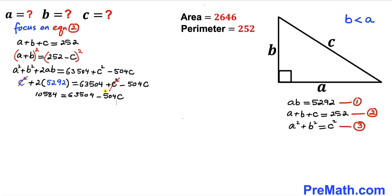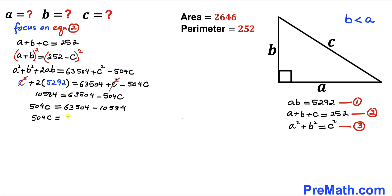Moving negative 504C to the left and 10,584 to the right, we get 504C equals 52,920. Dividing both sides by 504, our C value turns out to be 105.